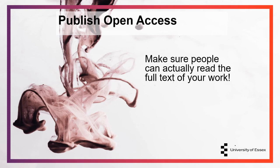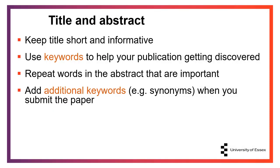Another great way to improve your citations is to publish your work open access. Publishing open access means your paper is free to read for everyone, regardless of whether they are affiliated with an institution. By ensuring everyone can read the full text of your work, it will make it more likely that it will be cited. Thinking carefully about your title and abstract can also help. The title and abstract are usually the first thing a reader sees and influences whether they will read on. Keep the title short and informative, and make sure to use keywords from your research area in your title and repeat these words in your abstract. It's also a good idea to include additional keywords on submission that are synonyms of your original keywords, as these will be added to your paper's metadata and make it more likely that your work will be discovered through literature searching.